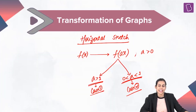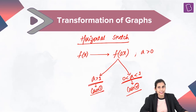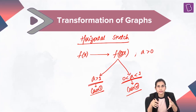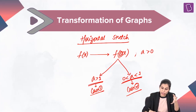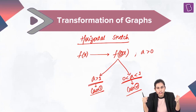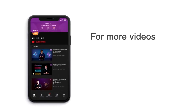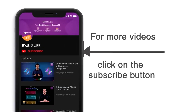That ends the discussion on horizontal stretch. In summary: if a is strictly greater than 1, take the graph of f(x) and shrink it along the x-axis by a times to get the graph of f(ax). If a is a fraction strictly between 0 and 1, stretch the graph of f horizontally by a times to get the graph of f(ax). For more videos and live lectures on JEE, click the subscribe button now.